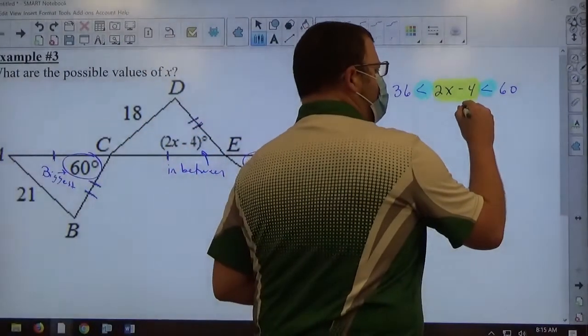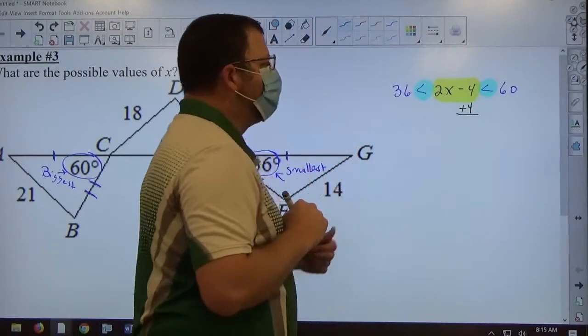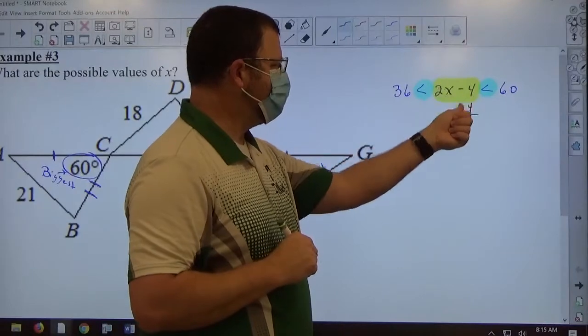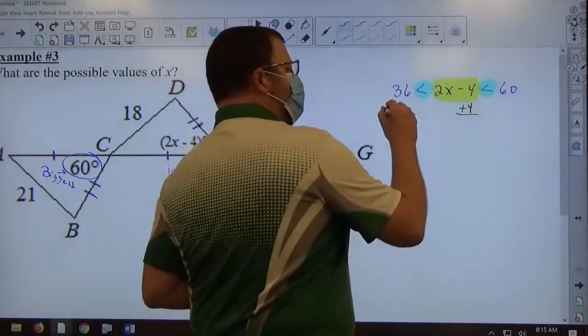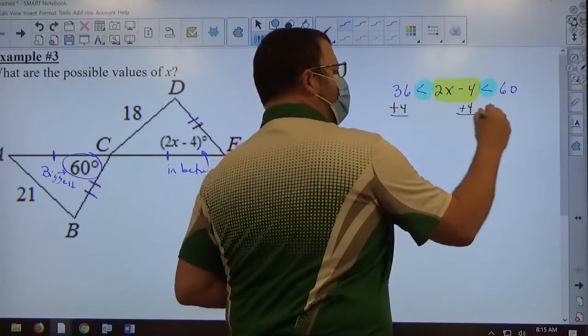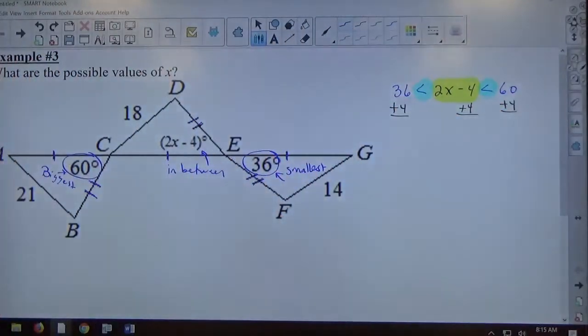So anything I do to any piece, I have to do to all pieces. So if I want this minus 4 to go away, I'm going to get rid of it by doing plus 4. The consequence of changing this portion of this compound inequality by plus 4 is I have to change all parts of it by plus 4. There are three parts. So all three parts get changed the same way.